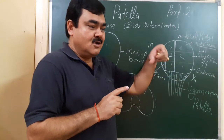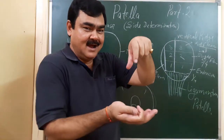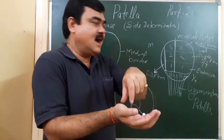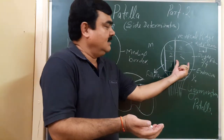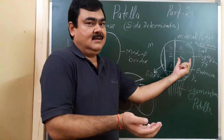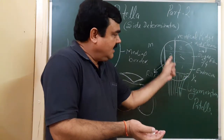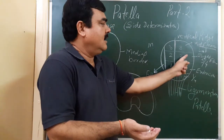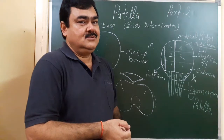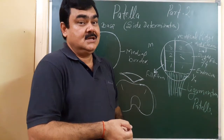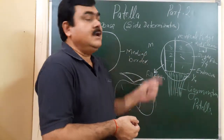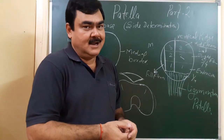If you drop the patella on a table, it rests on the lateral side, due to the larger area of the lateral portion. This is the method of how you can determine the side of the patella.